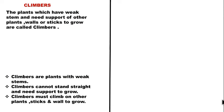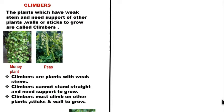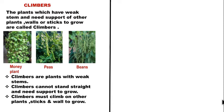The next type of plants are climbers. Plants which have weak stems and need the support of other plants, walls or sticks to grow are called climbers. For example: money plant, peas, beans. These climbers need support to grow — it may be another plant, a wall, or sticks. Climbers have weak stems that cannot stand straight, so they must climb on other plants, sticks or walls to grow.